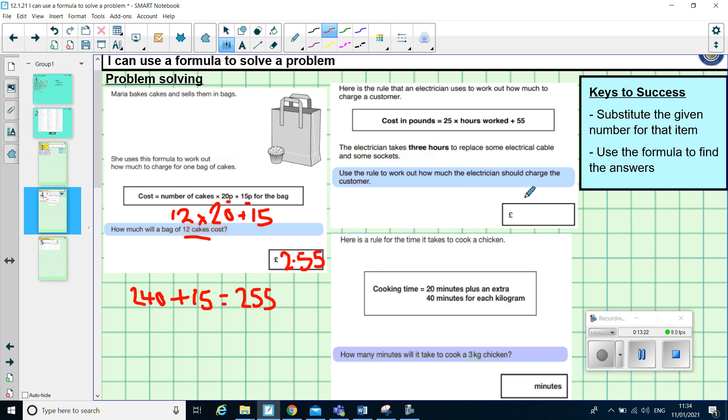We'll have a look at a second one now. So, here is the rule that an electrician uses to work out how much to charge a customer. So, again, we've got the cost. So, the cost in pounds equals 25 times hours worked plus 55. The electrician takes three hours to replace some electrical cable and some sockets. Use the rule to work out how much the electrician should charge. So, again, we're trying to find out the cost. They've given us 25 times the number of hours worked. Well, he worked three hours. So, I'm going to copy out that formula again. We've got 25 times 3 add 55. So, first of all, I've got to do 25 times 3. 25 times 3, if I count up in 25, it's 25, 50, 75.